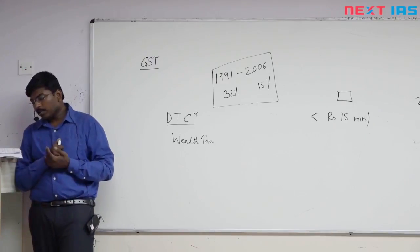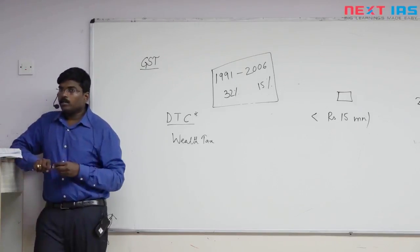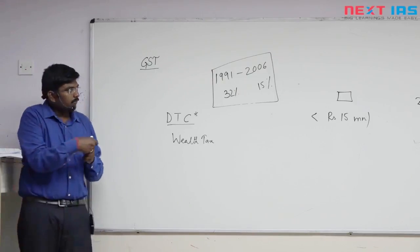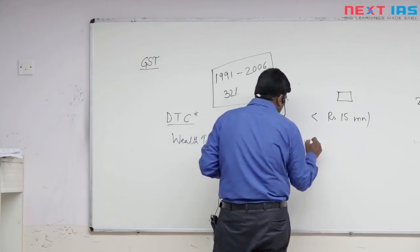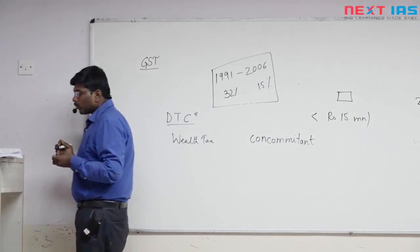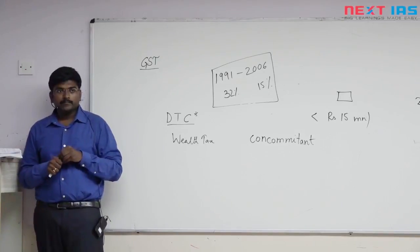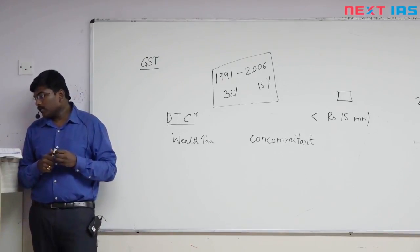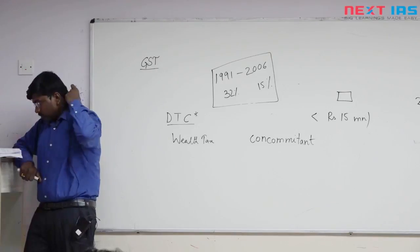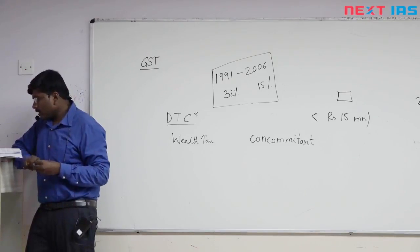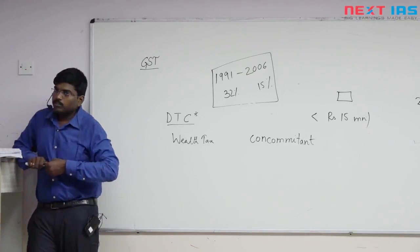However, the decrease in agriculture's GDP contribution has not led to a concomitant decrease in the number of people dependent on agriculture. Agriculture still contributes 49% of total manpower and 64% of rural manpower.